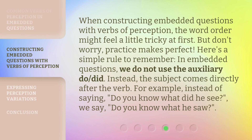When constructing embedded questions with verbs of perception, the word order might feel a little tricky at first. But don't worry, practice makes perfect. Here's a simple rule to remember: in embedded questions, we do not use the auxiliary 'do' or 'did.' Instead, the subject comes directly after the verb. For example, instead of saying 'Do you know what did he see?' we say 'Do you know what he saw?'